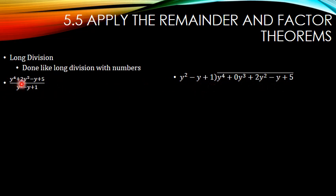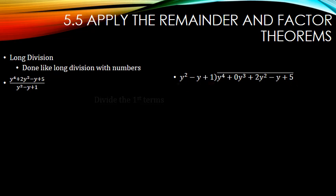Notice I'm missing y cubed. I need to have all the powers of y, so I put zero y cubed here, so I have all the powers of y: y to the fourth, cubed, squared, first, and a constant. So first, divide the first terms. y to the fourth divided by y squared is y squared. Put that in the column with the squares.